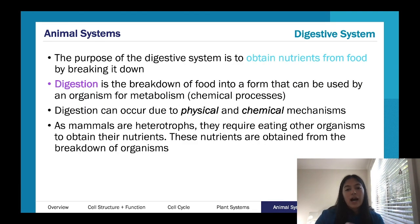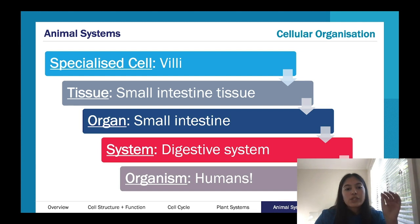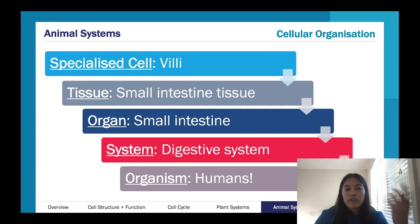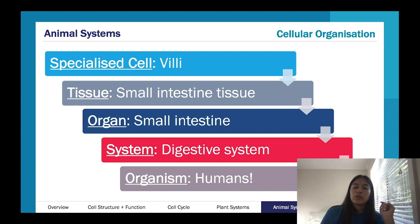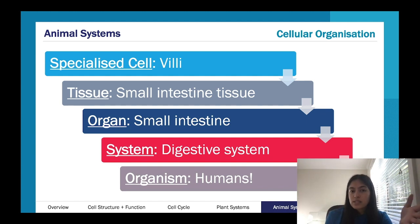We just have to get our nutrients from food, which is why the digestive system is really important. Similar to the flow we saw with vascular bundles in the plant, for our digestive system the specialized cell — in the small intestine — we're thinking of villi. These are little extensions in your small intestine that absorb nutrients from food. All together they create the tissue, and then that creates your small intestine, which is just one organ in your digestive system, leading to humans as the organism.